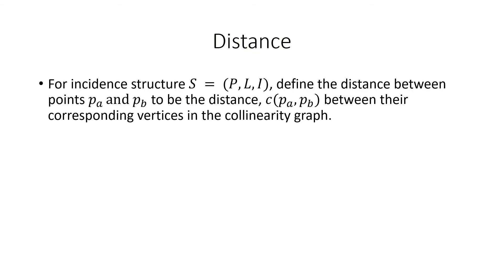As another application, collinearity graphs, just like incidence graphs, let us define a notion of distance in an incident structure. To start, we're only going to consider distance between pairs of point objects. We can define the distance between a pair of points in an incident structure to be the distance between the vertices corresponding to those points in the collinearity graph.